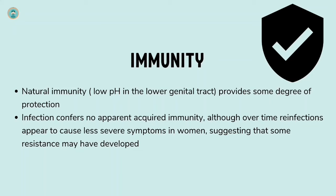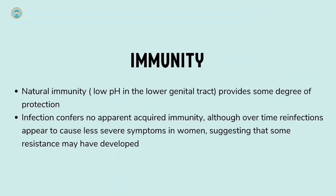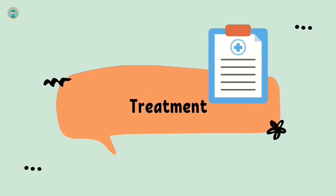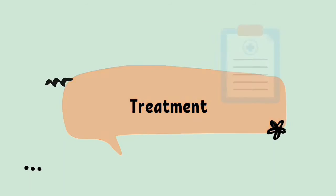Regarding immunity, the naturally low pH of the lower genital tract provides some degree of protection. Infection confers no apparent acquired immunity, although over time reinfections appear to cause less severe symptoms in women, suggesting that some resistance may develop against this organism.